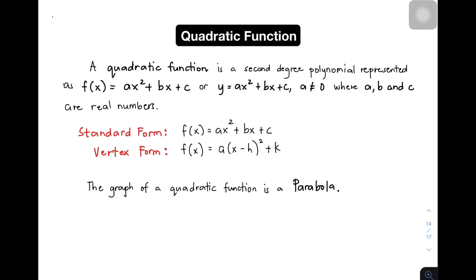We have here a definition of quadratic function. A quadratic function is a second degree polynomial represented as f(x) = ax² + bx + c, or we can also represent it as y = ax² + bx + c, because f(x) in function notation is equal to y.